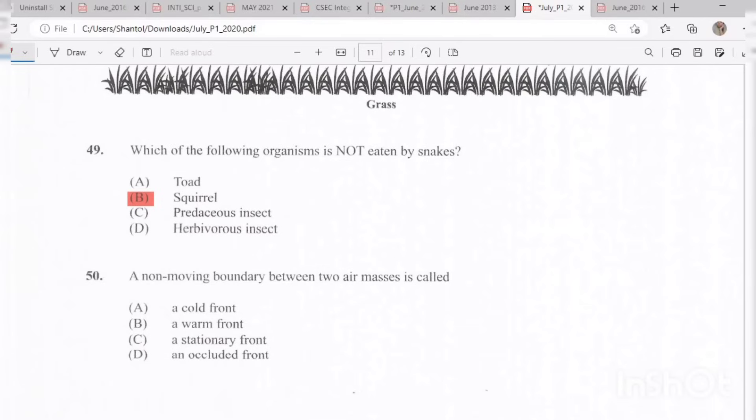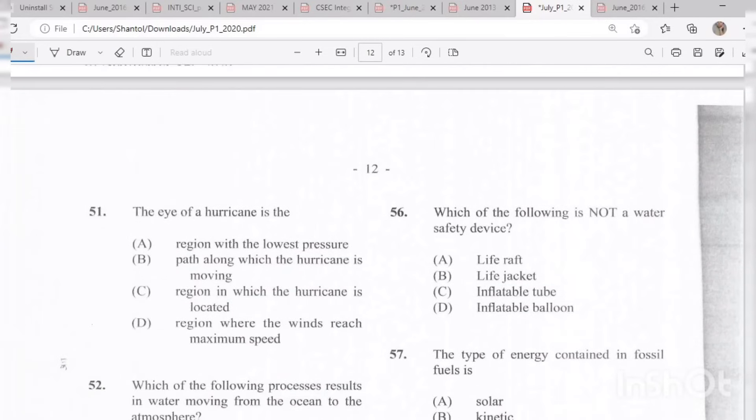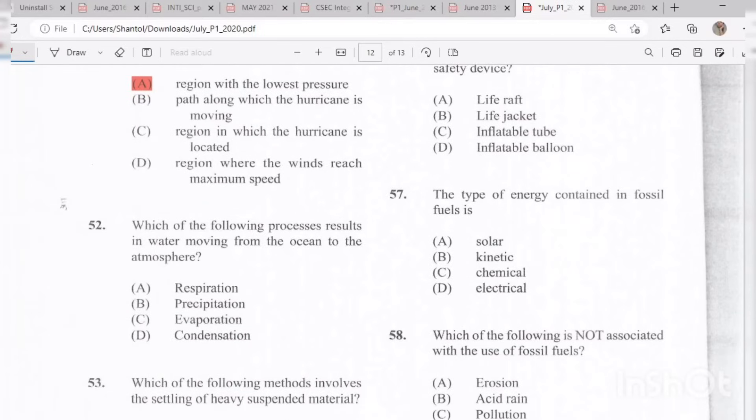Question 50: A non-moving boundary between two air masses is called C, a stationary front. Question 51, 10 more questions to go. The eye of a hurricane is A, the region with the lowest pressure. Question 52: Which of the following processes results in water moving from the ocean to the atmosphere? This is easy. C, evaporation.